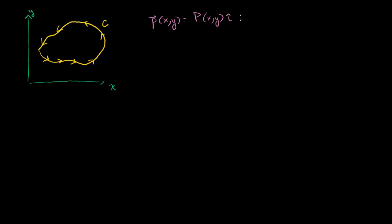So if you had to visualize this vector field, all of the vectors only go in multiples of the i unit vector — or they could be negative multiples. But they don't go diagonal or up; they all go left to right or right to left. That's what this vector field would look like.